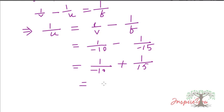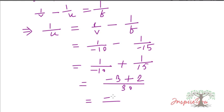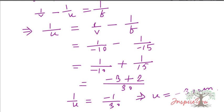So 1/u equals minus 1/10 plus 1/15. The LCM is 30. This gives minus 3/30 plus 2/30, which equals minus 1/30. Therefore 1/u equals minus 1/30, so u equals minus 30 centimeters. The negative sign confirms the object is placed in front of the lens. The object distance is 30 centimeters from the lens.